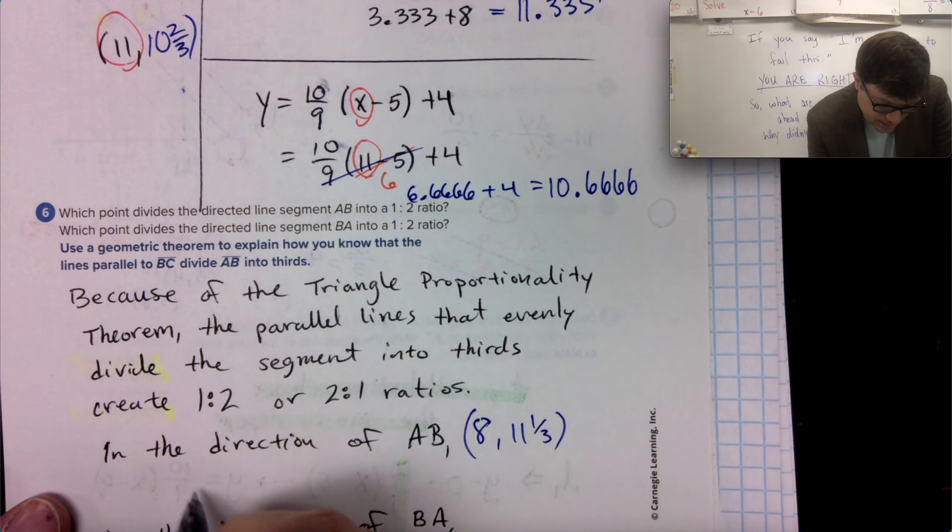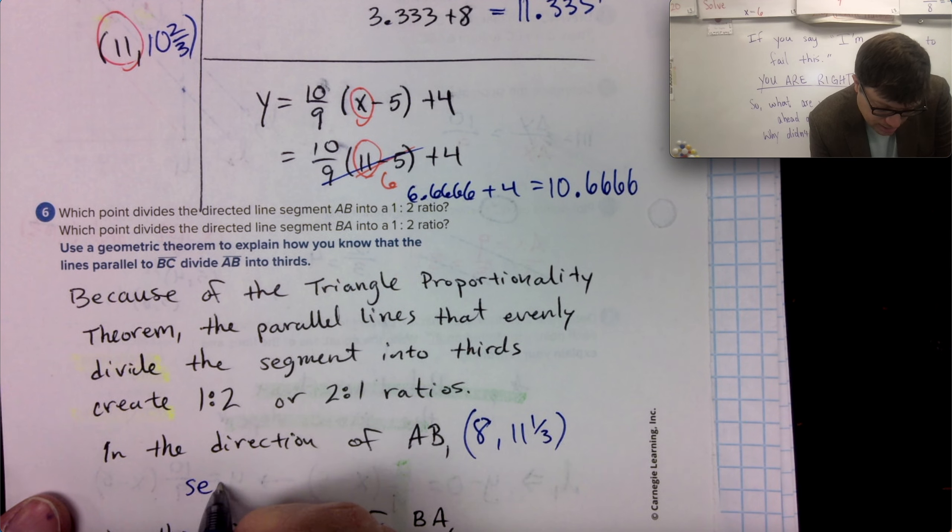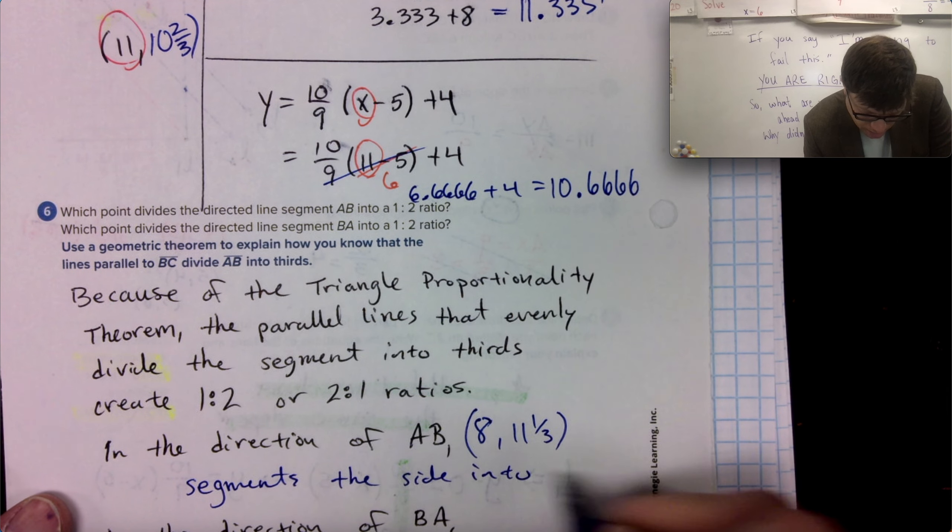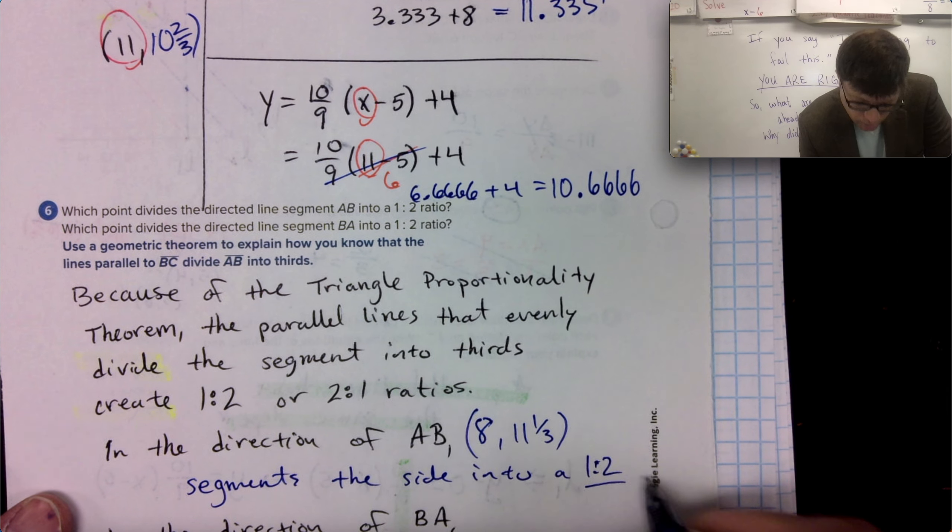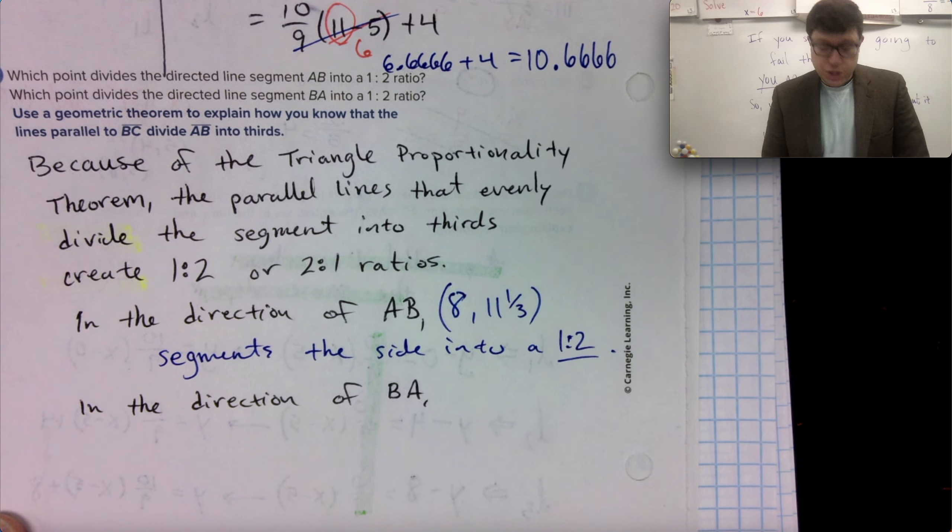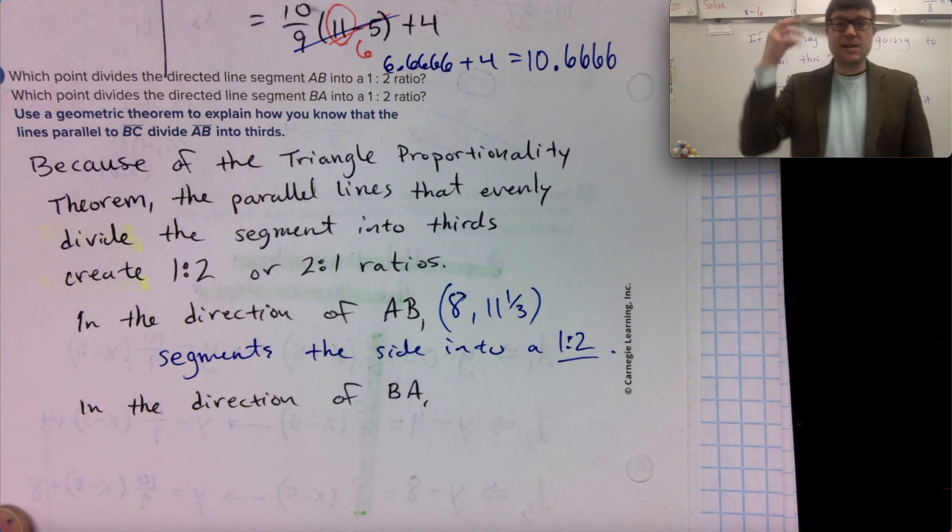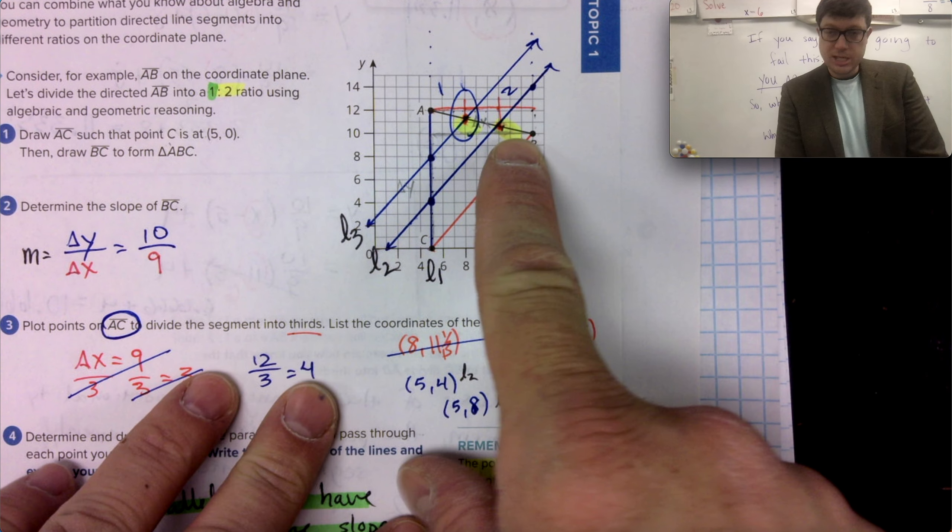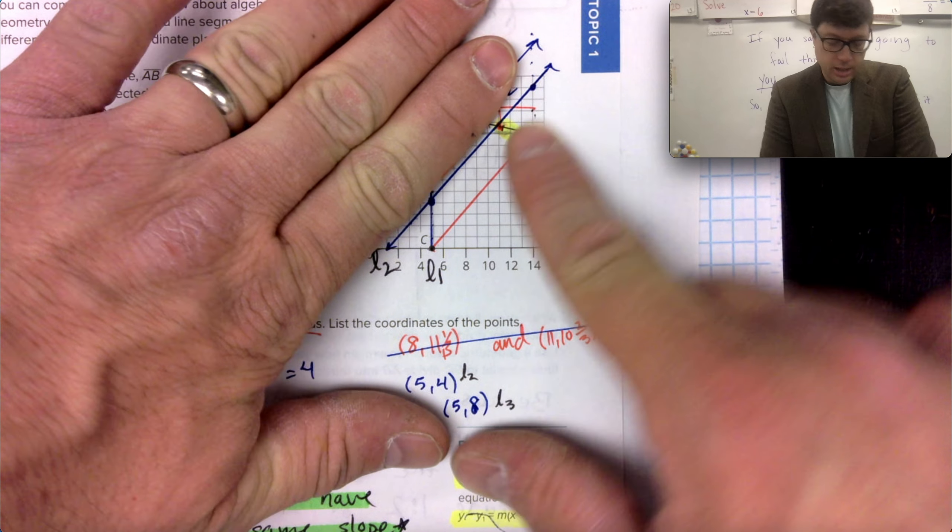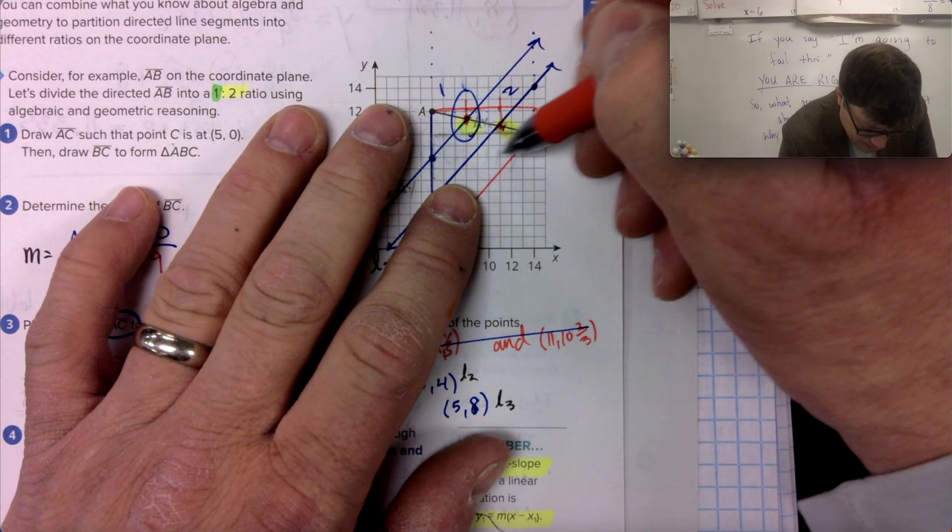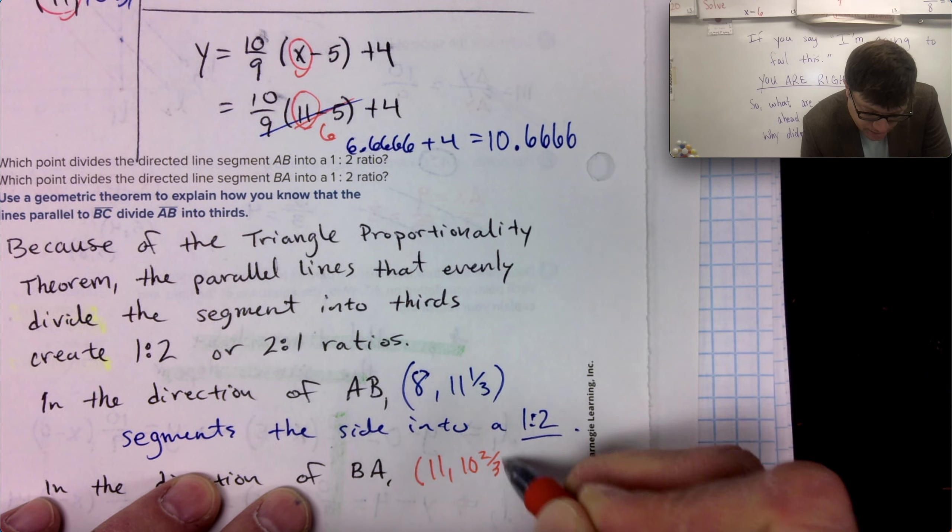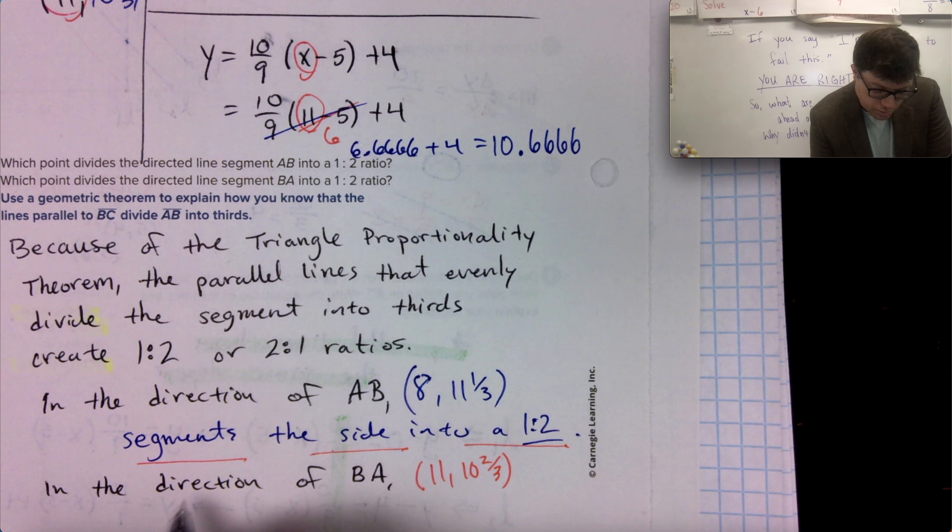In the direction of AB segments the side into a one to two ratio by process of elimination and the fact that there's only one other choice, but also because if you go the other direction, then the one to two relationship goes this way. This would be the one to this segment being the two. So this is the other coordinate for a one to two ratio. And that coordinate will be 11 comma 10 and two thirds. Segments the side into a one to two ratio.